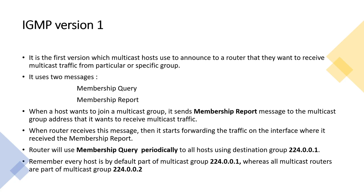Version one is very basic and simple. It only uses two types of messages: membership query and report messages. The router will always send query messages, and a host will use report messages to communicate with the router. So queries are sent by the router, and reports are sent by the host that wants to receive the traffic.